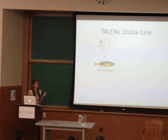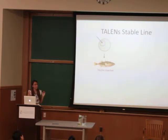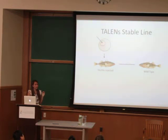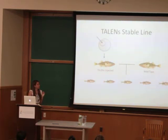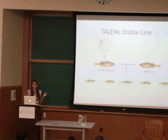Here's how we generate the stable line. We take a TALENS-injected fish that has BMP6 deletions and breed it with a wild-type non-injected fish. We can then screen the offspring to determine whether or not the BMP6 deletion has been passed on.